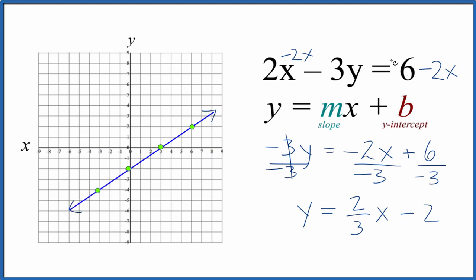So the key really is rearranging this equation so we have slope-intercept formula. And then we've got rise over run for the slope, and then the y-intercept. You could also use a table of values. And if you need help with that, there's a link at the end of this video.